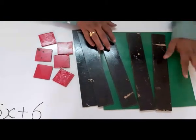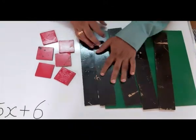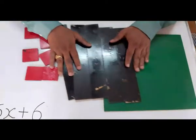So it is total x square plus 5, 1, 2, 3, 4, 5. So 5x plus 6. How to split the middle term? Let us see.